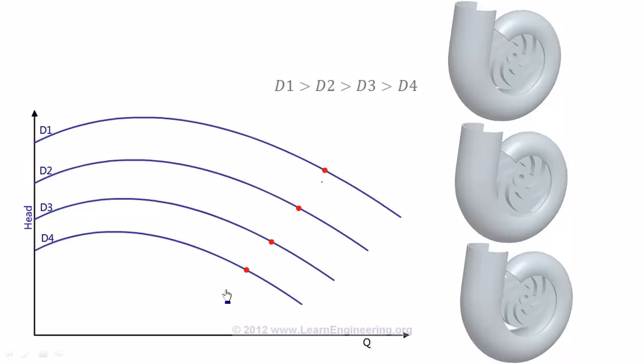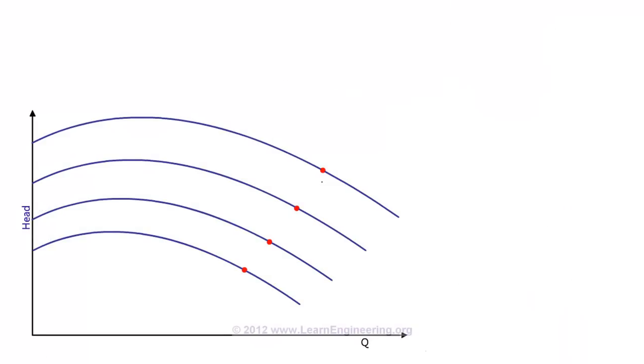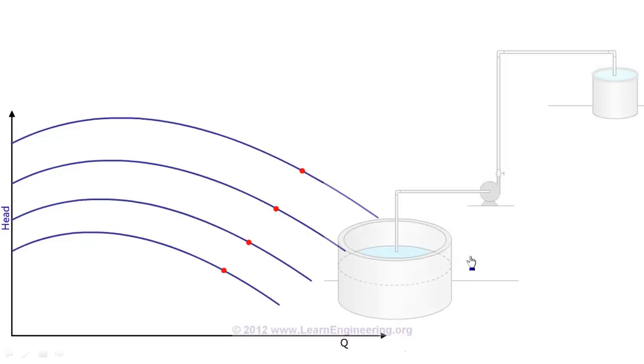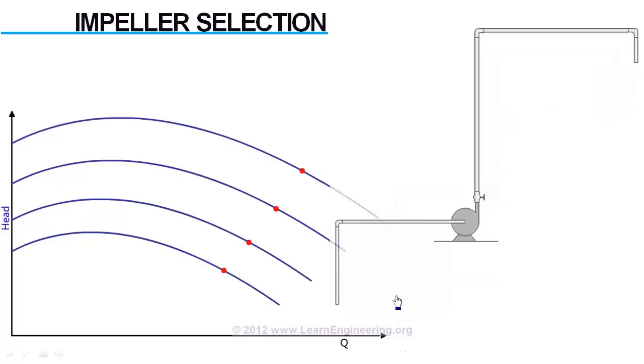So back to the basic question: how to select a centrifugal pump for this application. Main condition is that fluid should be pumped at a particular flow rate to a specified height. Performance characteristics of the system are given in a system curve. That means, how pressure drop varies in the system with flow rate.